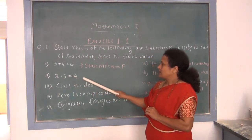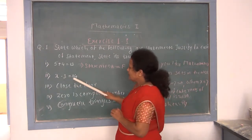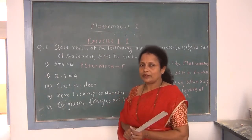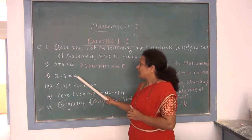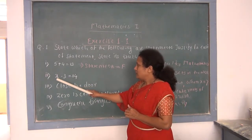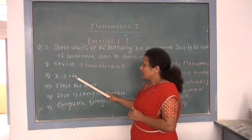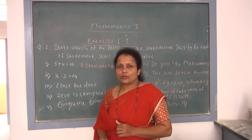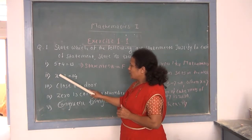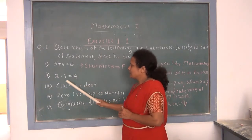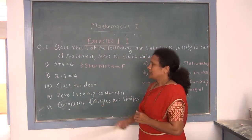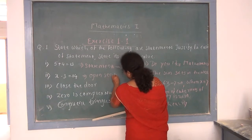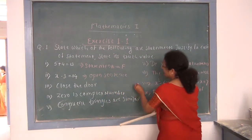Remember: when a sentence is either true or false, we can say it is a statement. The second sentence is x minus 3 equals 14. When we take different values of x, the truth value varies from person to person — it is an open sentence and is not a statement.